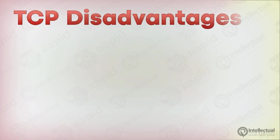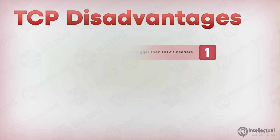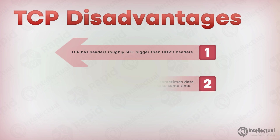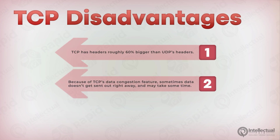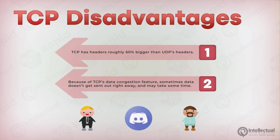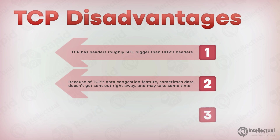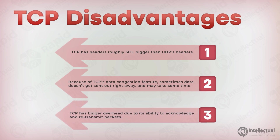However, TCP has a few disadvantages. For one, TCP has a larger header — UDP headers are about 60% smaller than TCP headers. Additionally, a side effect of TCP's data congestion feature is that not all the data gets sent out immediately and may take some time. In some cases, that's not what you want. Discord, for example, is something that requires data to be delivered seamlessly to make the experience feel as real-time as possible — and that real-time experience is sometimes not provided by TCP. Lastly, TCP has a bigger overhead due to its ability to acknowledge and retransmit packets.